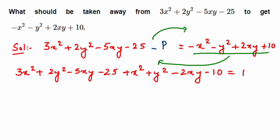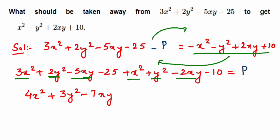Now I combine like terms on the left-hand side. 3x² + x² gives 4x². Then 2y² + y² gives 3y². For the xy terms: -5xy - 2xy gives -7xy. For the constants: -25 - 10, since both are negative, gives -35. So the left side simplifies to 4x² + 3y² - 7xy - 35, which equals P.